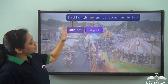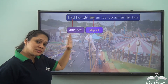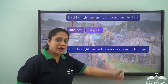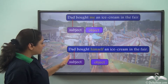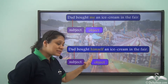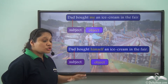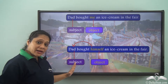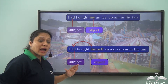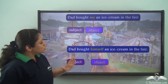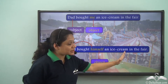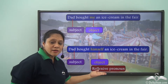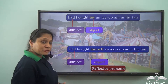Here the subject and the object are different. But if I say 'Dad bought himself an ice cream in the fair,' then in this sentence dad is the subject and himself is the object. So himself is the pronoun which is referring to dad — the subject and object are referring to the same person. So 'himself' is a reflexive pronoun.